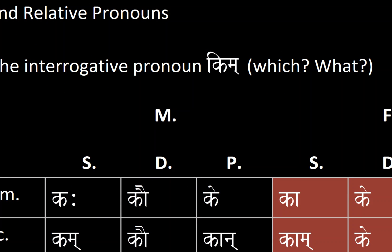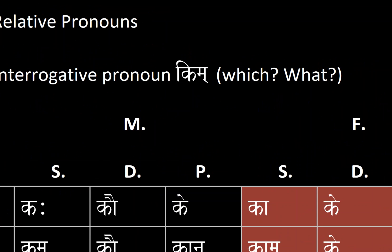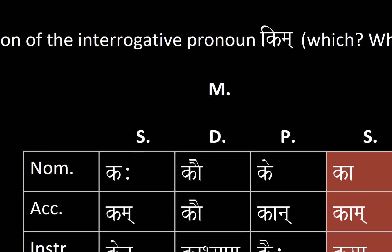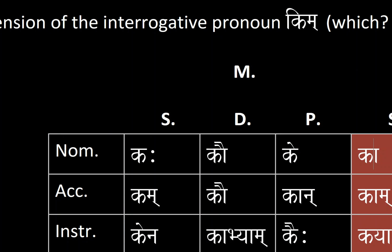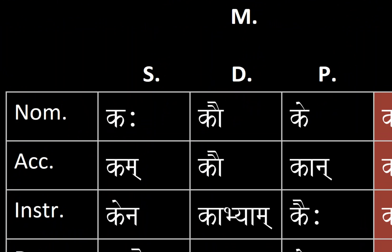In English, the words 'which' and 'what' are examples of interrogative pronouns. There are three different types of declension for the word Kim, and those declensions are masculine declension, feminine declension, and neuter declension — the three different genders. We will start going over the masculine declension.